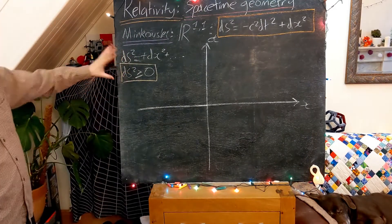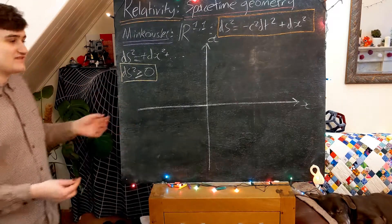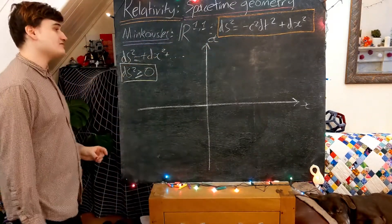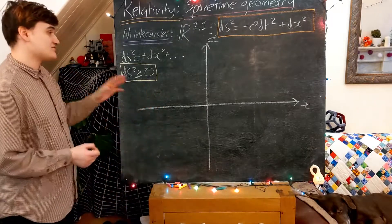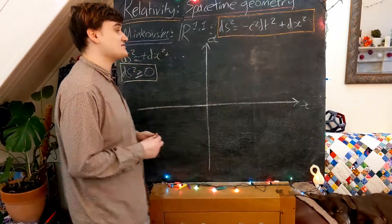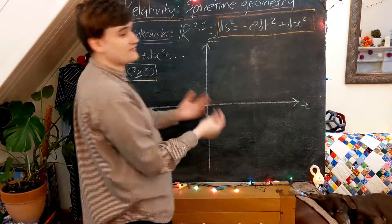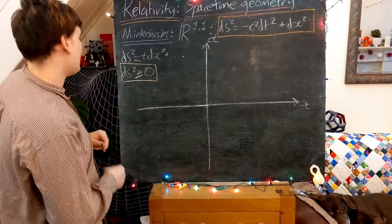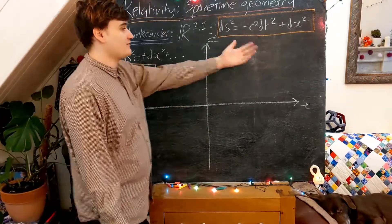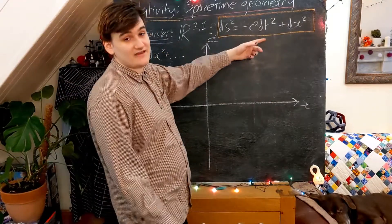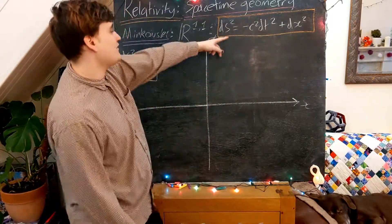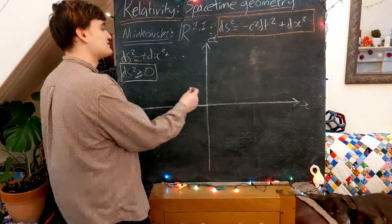A metric that satisfies positive definiteness and a few other properties is sometimes called a Riemannian metric. Now let's look at our Minkowski metric and see how this immediately changes. Not only can ds squared quite easily be zero — because of the minus sign, if dx squared equals c squared dt squared, ds squared is zero — but it can actually become negative. If dx squared is zero and dt squared is some positive quantity, the minus sign means ds squared is less than zero.